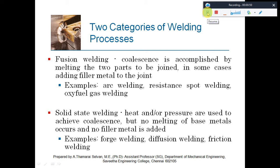Generally we classify the welding processes into two categories. One is fusion welding and another one is solid state welding, which we can also call pressure welding. In fusion welding, coalescence is accomplished by melting the two parts to be joined. In some cases we use a filler metal for the joint to be made. In solid state welding, we apply heat or pressure to achieve coalescence but there is no melting of the base metal, and we do not require a filler metal.